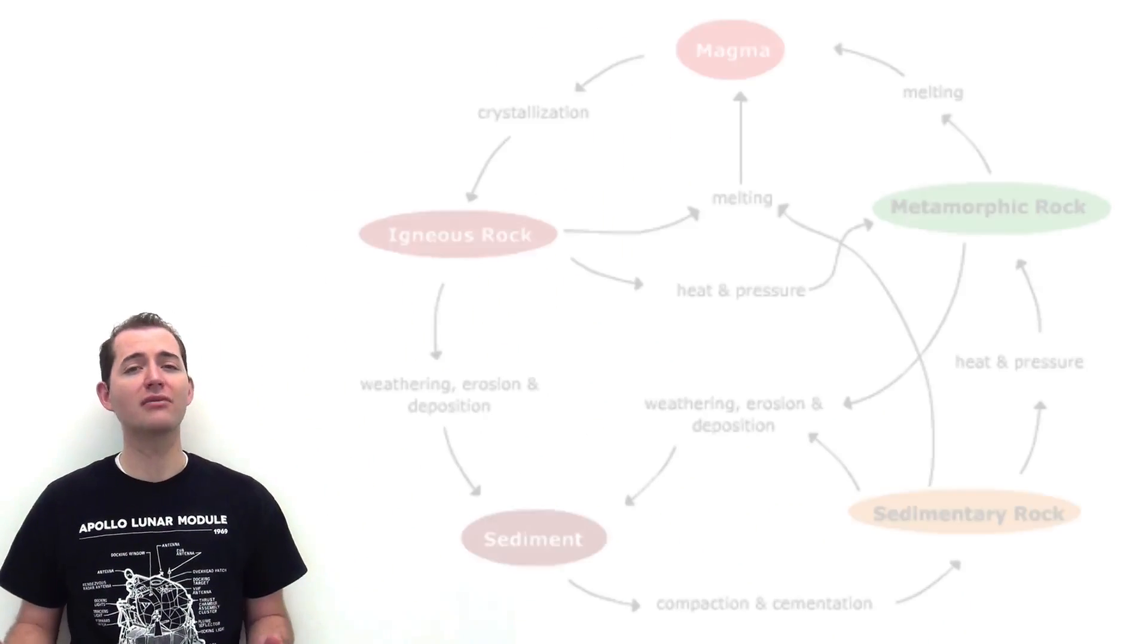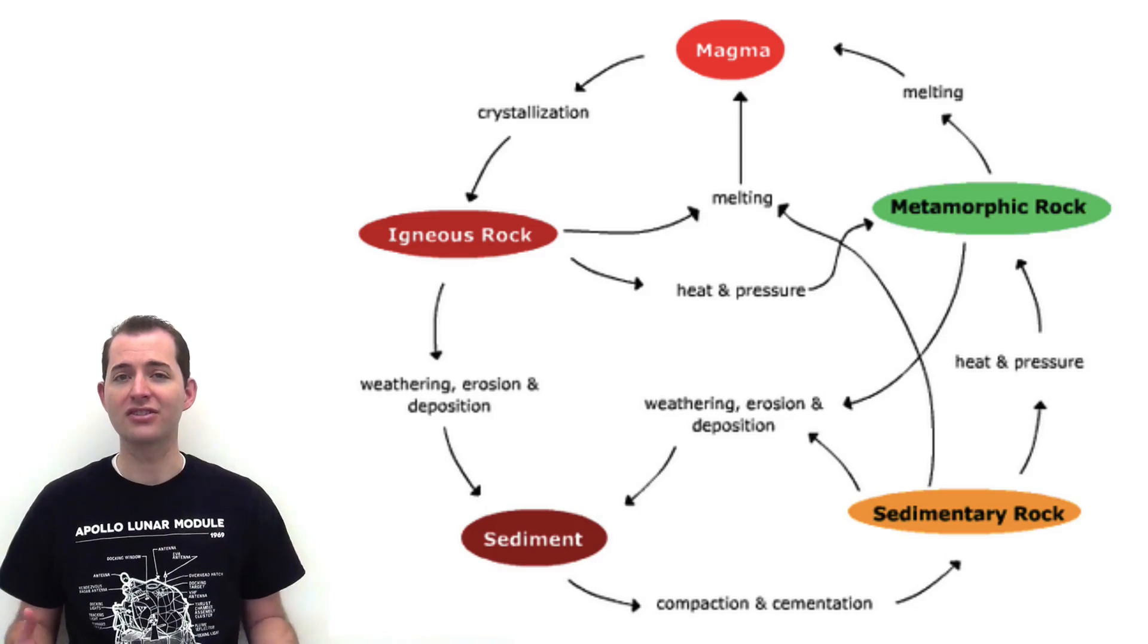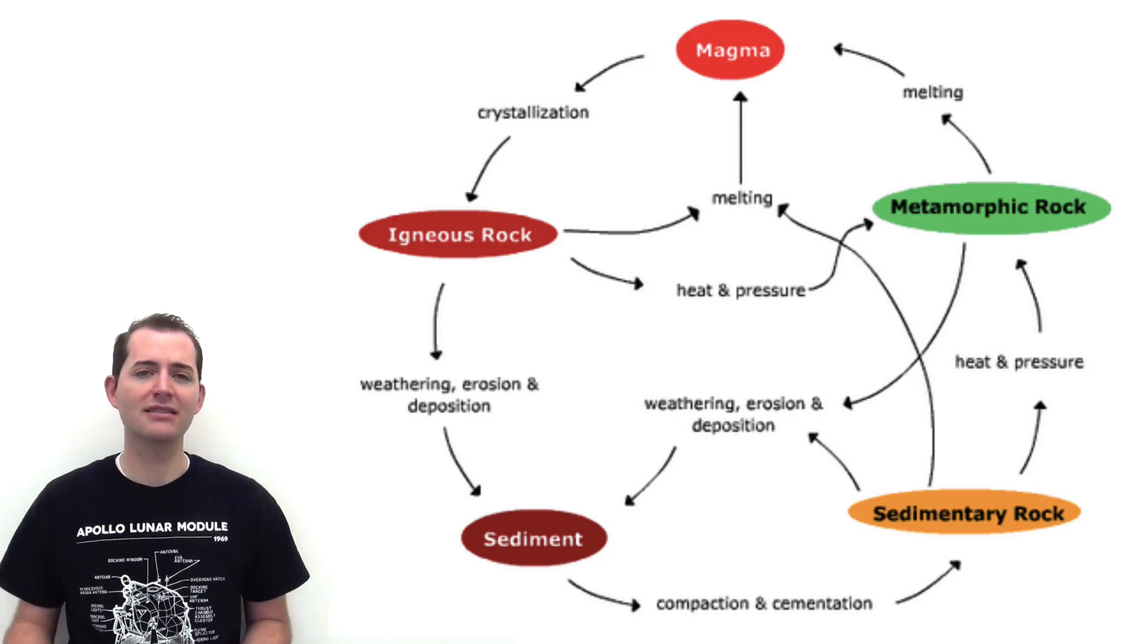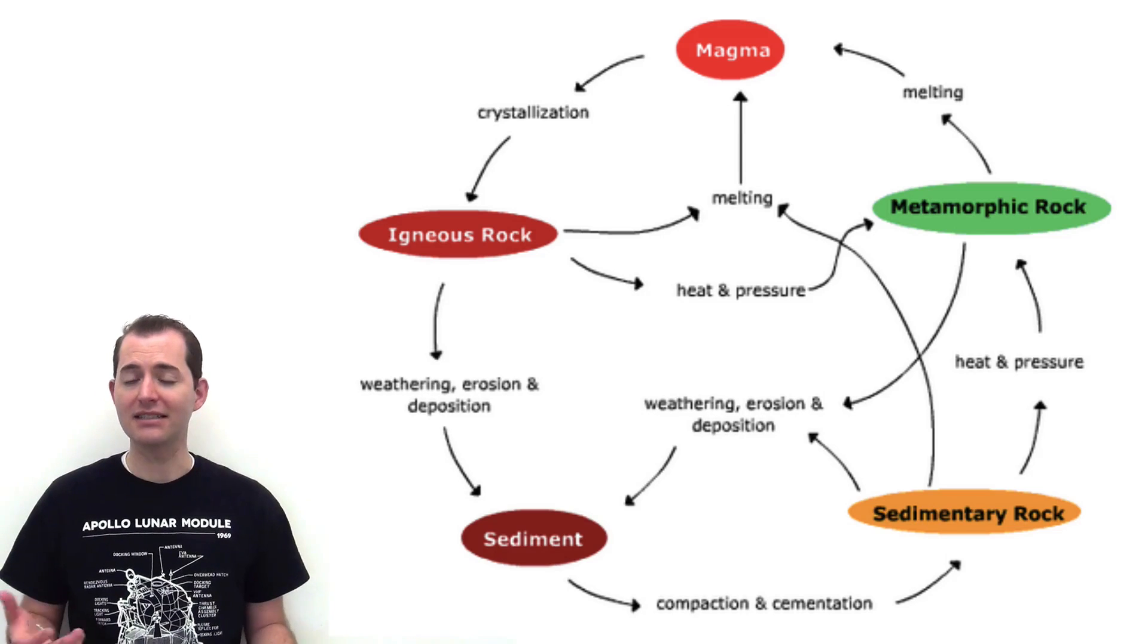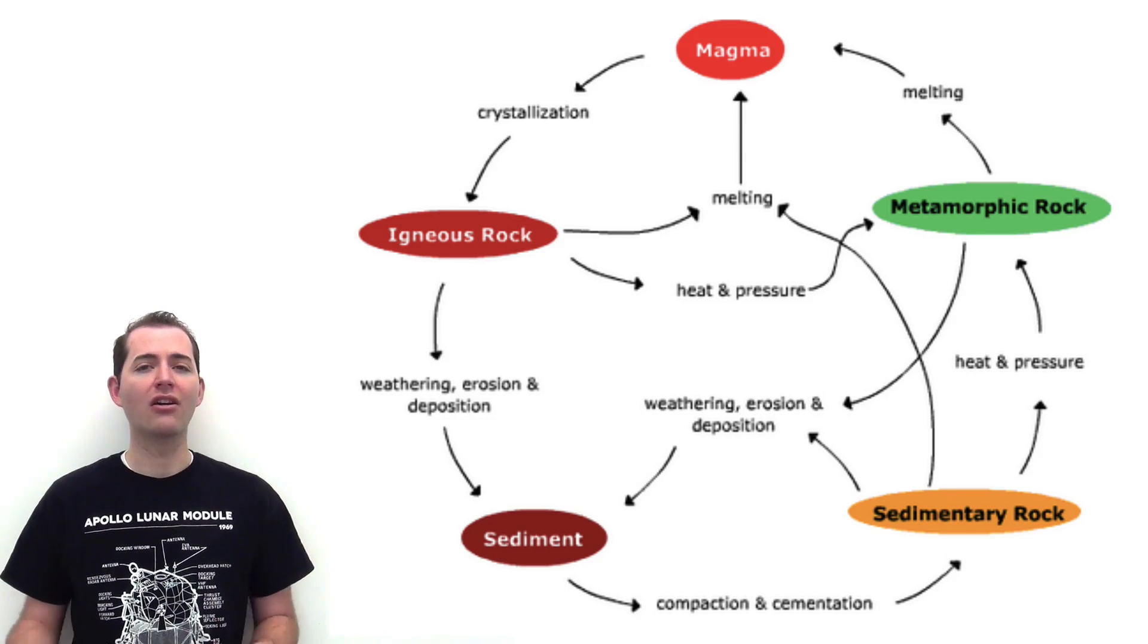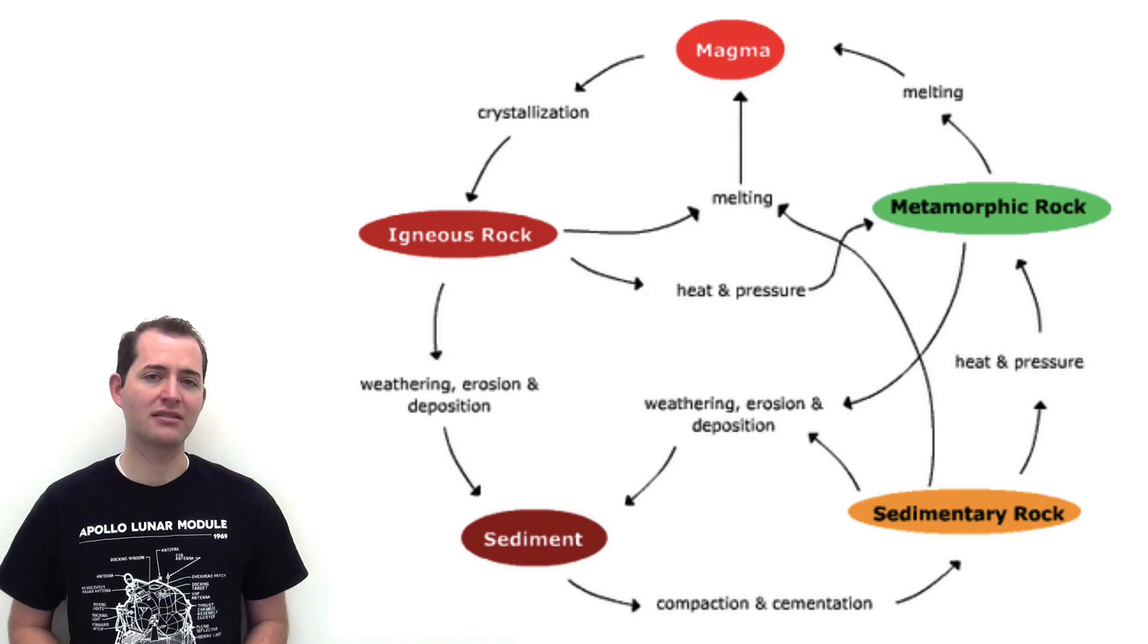The Rock Cycle is often represented as a model, such as this. All of the processes that lead to the formation of a single rock type - igneous, sedimentary, or metamorphic - are all included in the Rock Cycle.